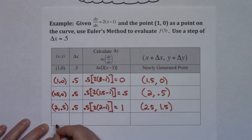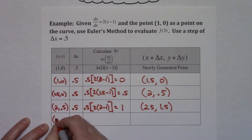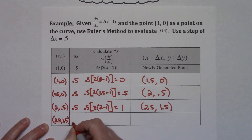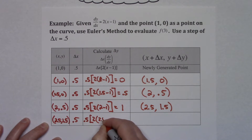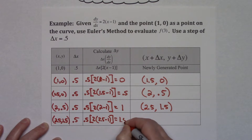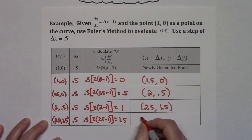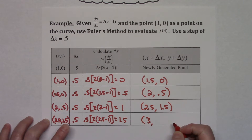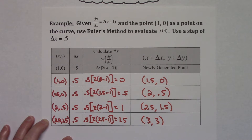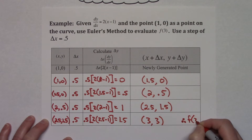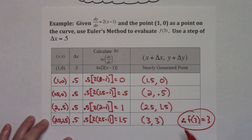It looks like we're going to have to do this one more time to get to 3. So starting with (2.5, 1.5), delta x of 0.5, calculating delta y: 0.5 times 2 times (2.5 minus 1) — I think this is going to come out to be 1.5. So my last point: 2.5 plus 0.5 gives me 3, and 1.5 plus 1.5 gives me 3. So from using Euler's method, I can conclude that f(3) equals 3.